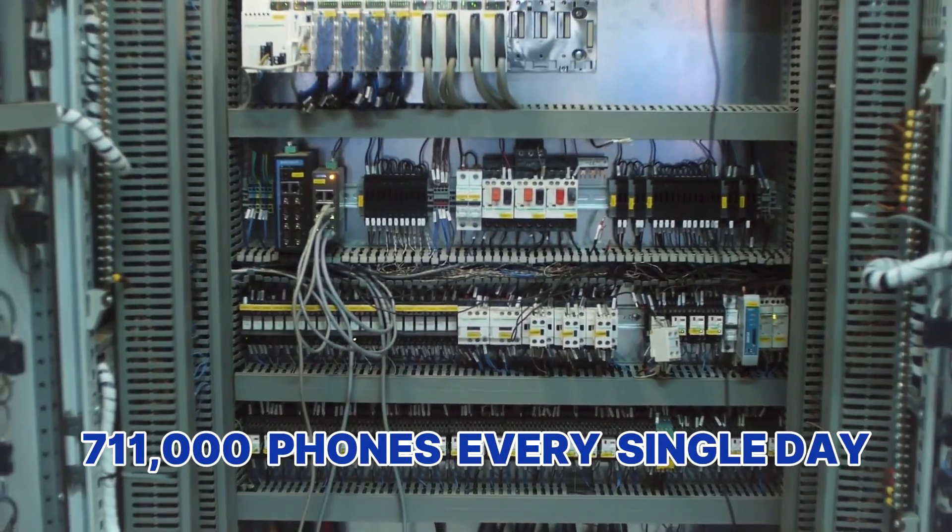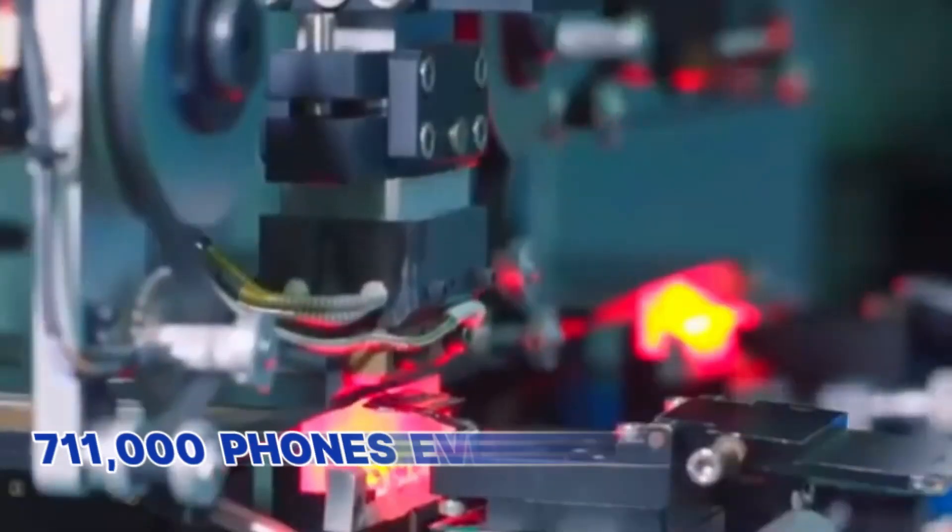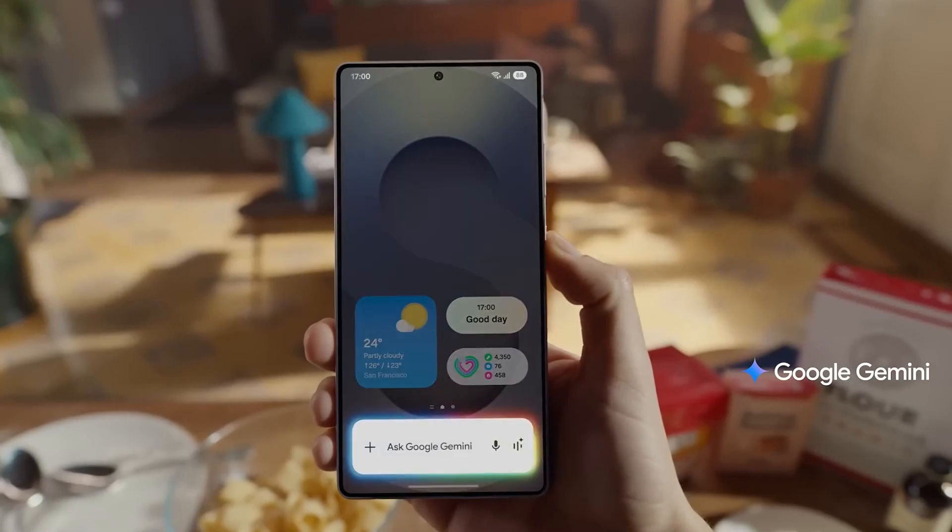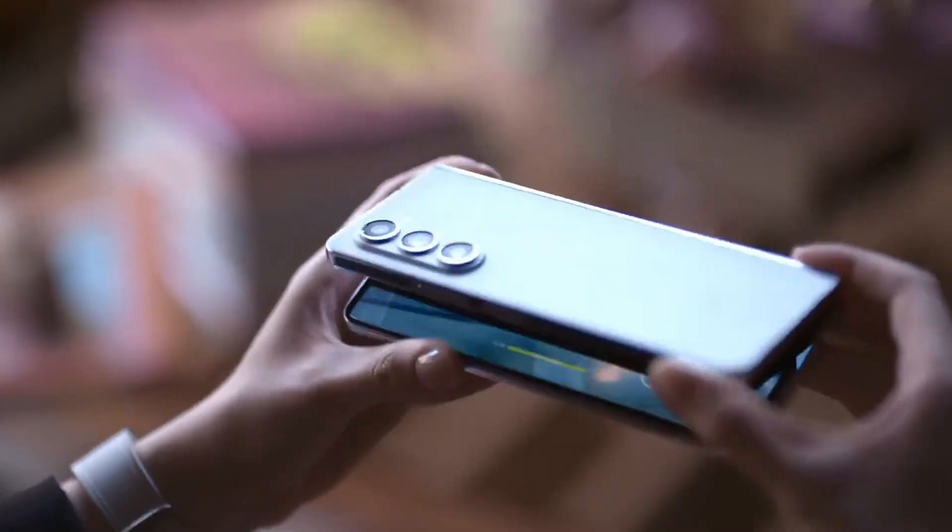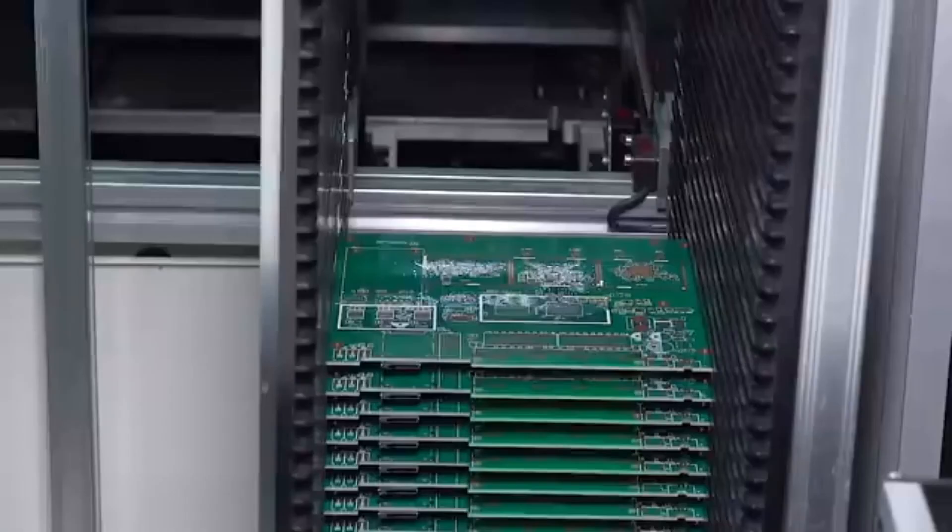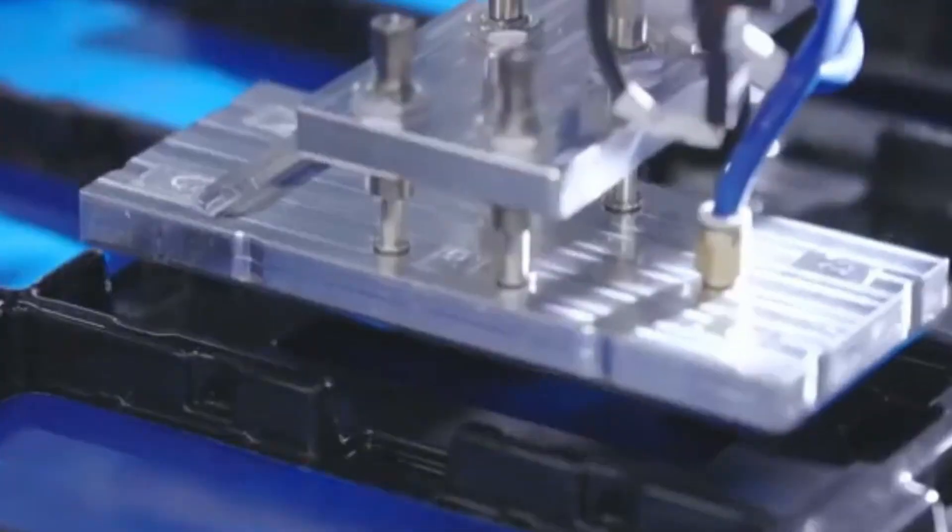That's 711,000 phones every single day. But here's the crazy part. Most people have absolutely no idea how this technological marvel actually works. Today, we're going behind the scenes of the most advanced smartphone factory on Earth, and what you're about to see will blow your mind.